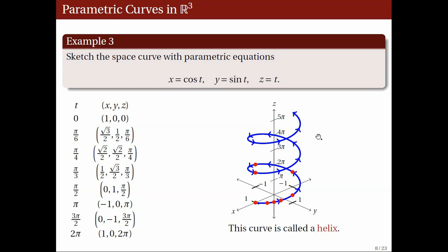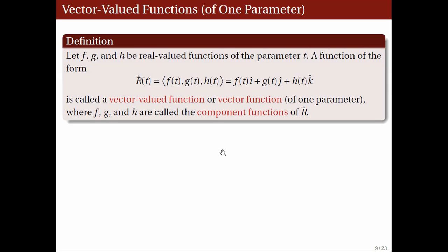To recap, for parametric curves, we have the independent variable t and three functions of t giving the x, y, and z coordinates of points on the curve. Now, take these three and form the vector having them as components. A function having input t and that vector as output is called the vector-valued function. A function r, whose value at t is the vector having components f of t, g of t, h of t, is called a vector-valued function, or simply a vector function. It is called vector-valued because its range is a set of vectors.